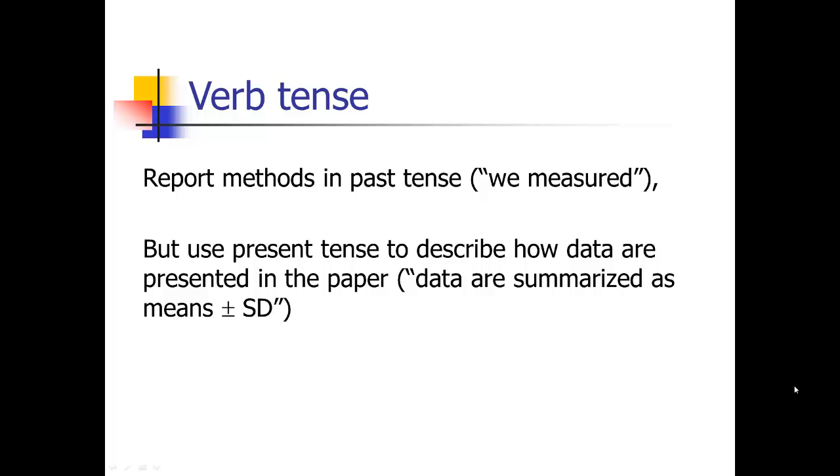For the verb tense in the methods section, as in the results section, you're going to report methods that are already completed in the past tense because it's already done. We measured, we enrolled, we analyzed. The data have already been analyzed, all that's in the past.